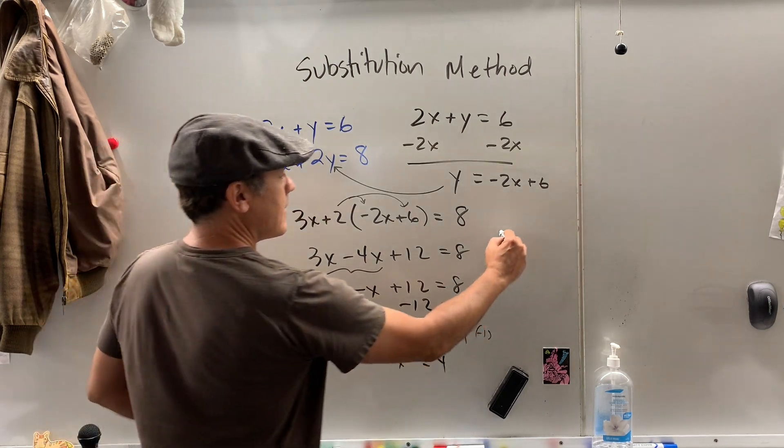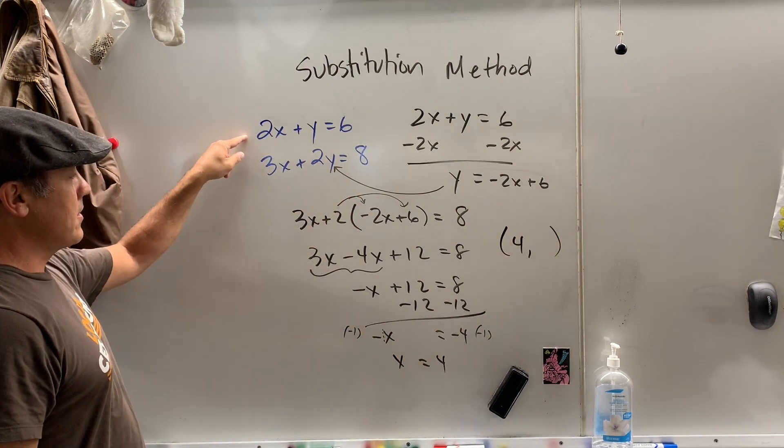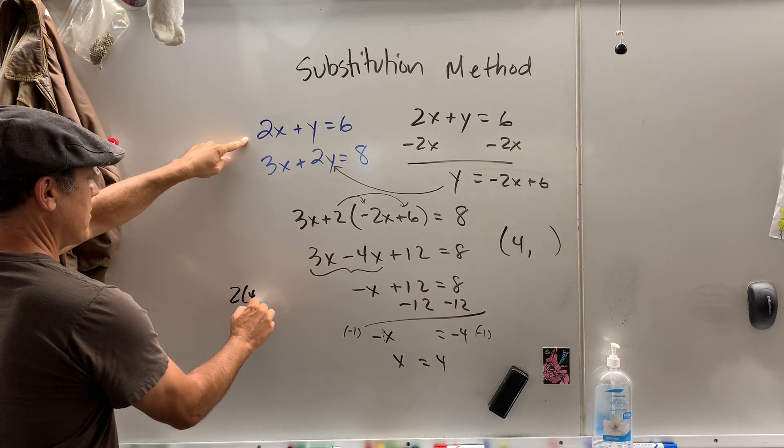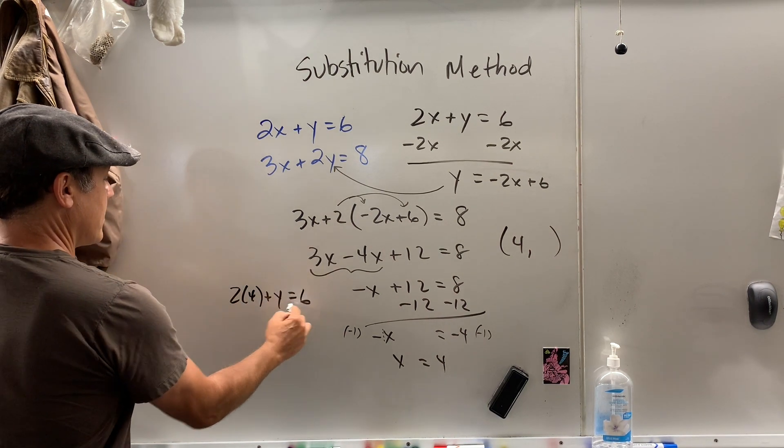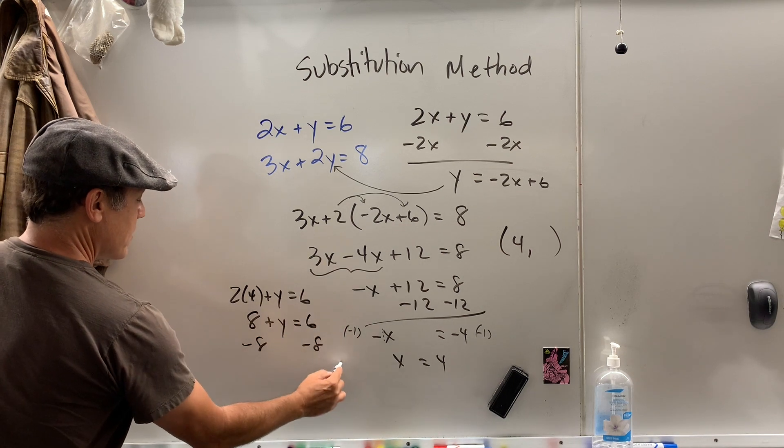Now, that is the x value. I can come back up here into either equation. This one looks a little easier. So I'm going to take 2 times 4 plus y equals 6. 2 times 4 is 8 plus y equals 6. I subtract 8 on both sides.